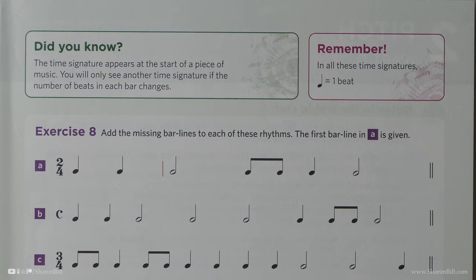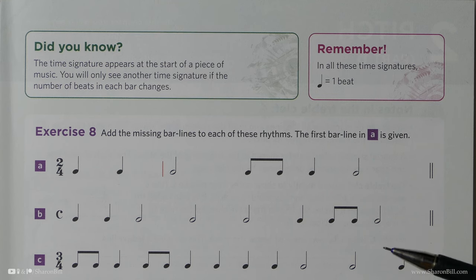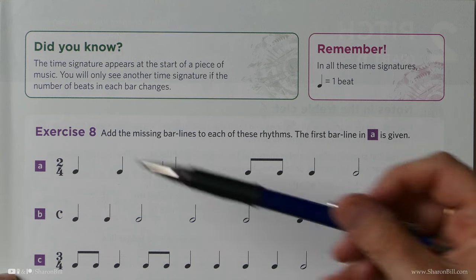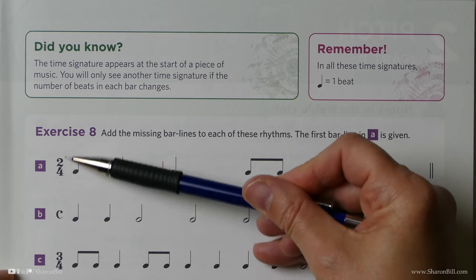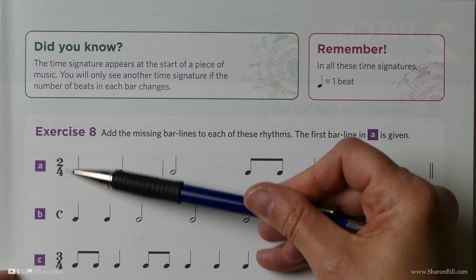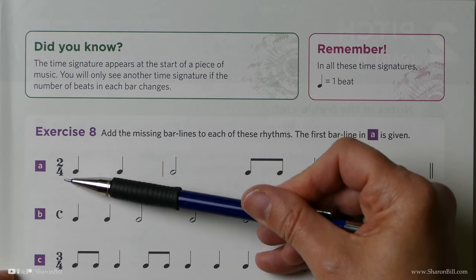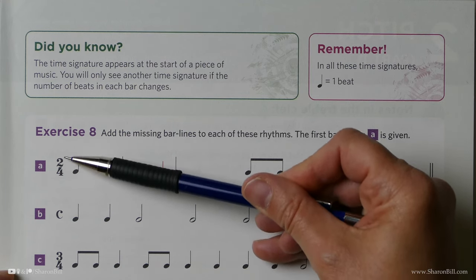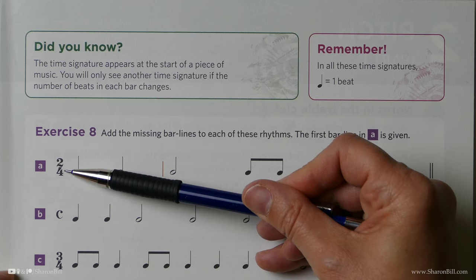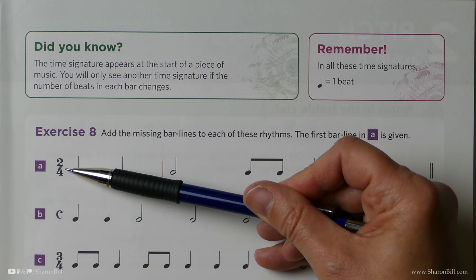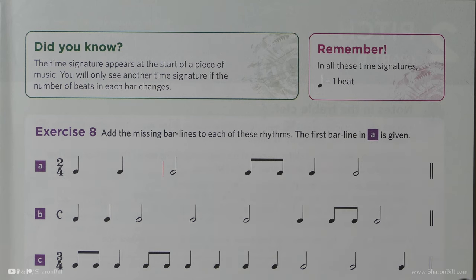Let's continue now, moving on to exercise 8. We've already discussed the fact that the time signature appears at the start of a piece, because we need to know what units of beats we're counting in for each bar so that we can play the piece accurately.